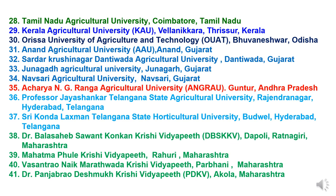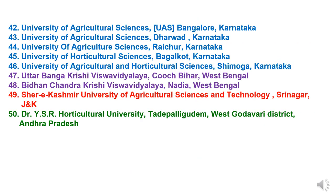Agriculture institutes in Maharashtra: Thirty-eighth is Dr. Balasaheb Sawant Konkan Krishi Vidyapeeth, Dapoli, Ratnagiri. Thirty-ninth is Mahatma Phule Krishi Vidyapeeth, Rahuri. Fortieth is Vasantrao Naik Marathwada Krishi Vidyapeeth, Parbhani. And forty-first is Dr. Panjabrao Deshmukh Krishi Vidyapeeth, PDKV, Akola, Maharashtra. Universities of Karnataka: Forty-second is University of Agricultural Sciences, Bengaluru. Forty-third is University of Agricultural Sciences, Dharwad. Forty-fourth is University of Agricultural Sciences, Raichur. Forty-fifth is University of Horticultural Sciences, Bagalkot. Forty-sixth is University of Agriculture and Horticultural Sciences, Shivamogga. In West Bengal: Forty-seventh is Uttar Banga Krishi Viswavidyalaya, Cooch Behar. Forty-eighth is Bidhan Chandra Krishi Viswavidyalaya, Nadia.